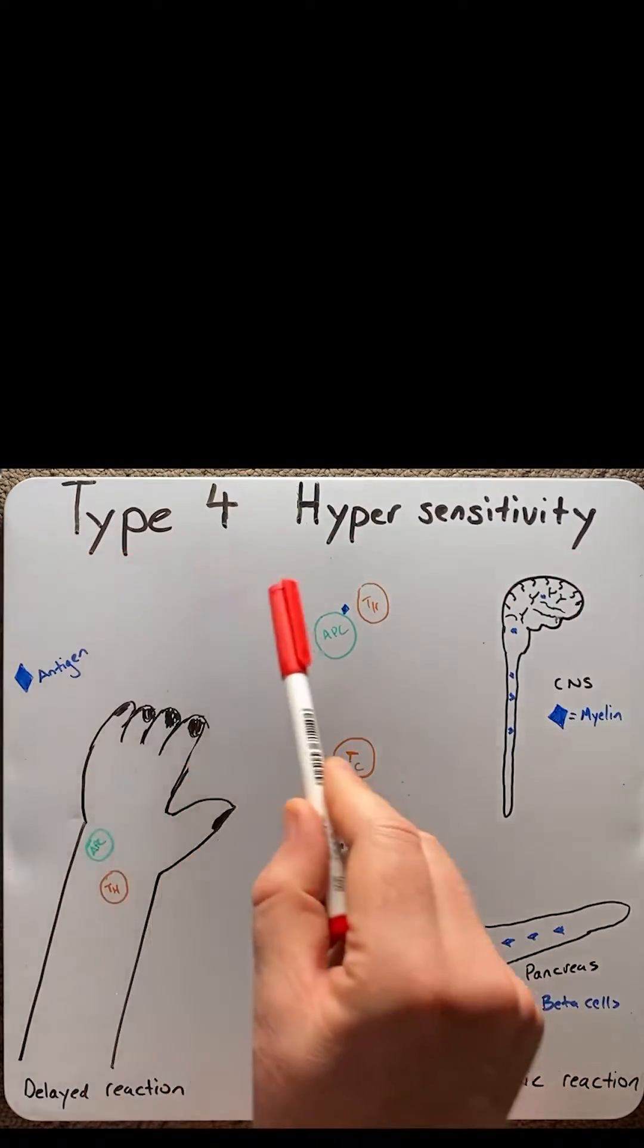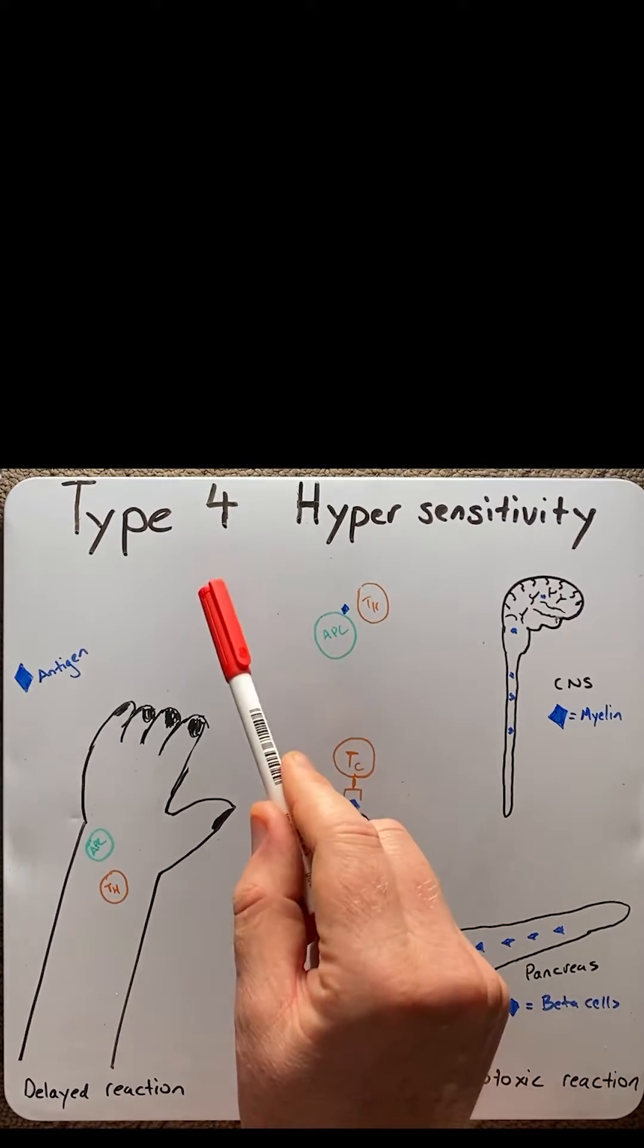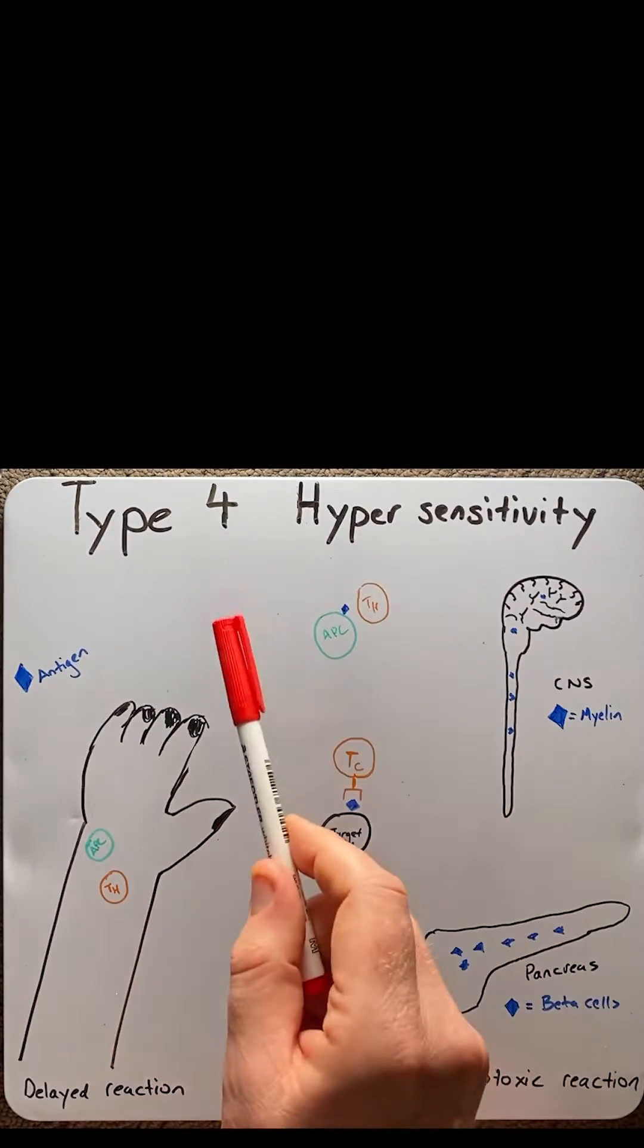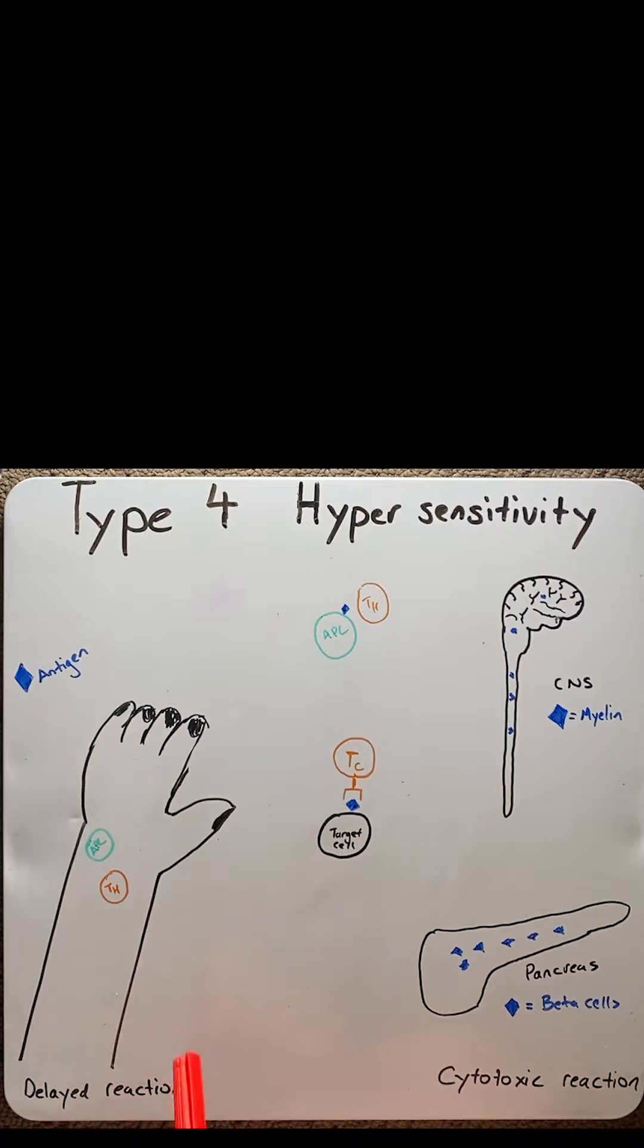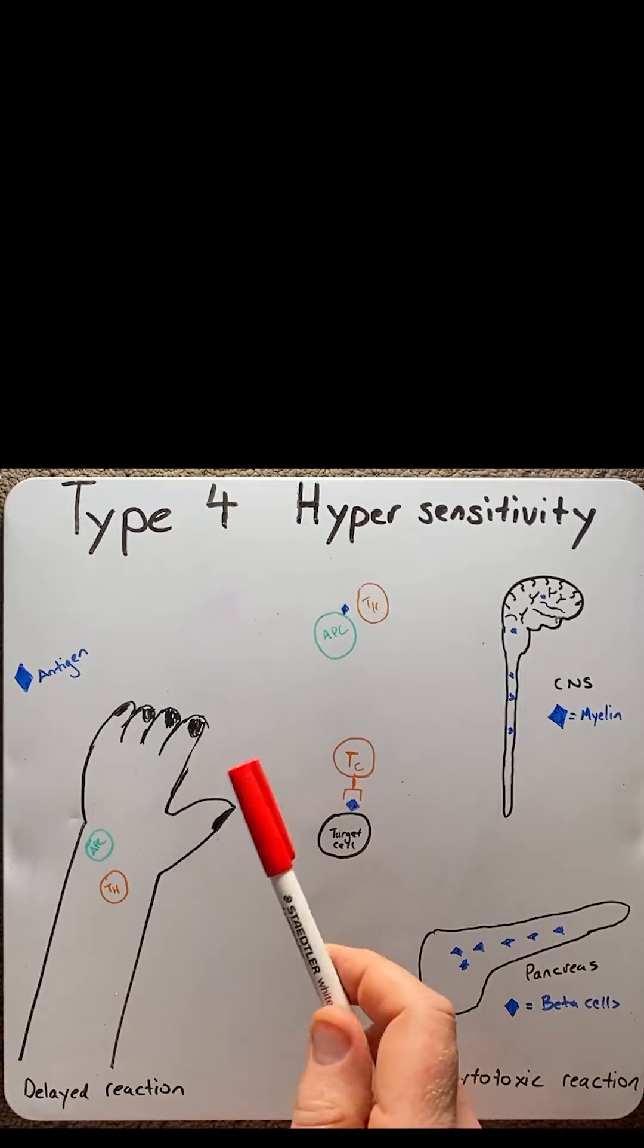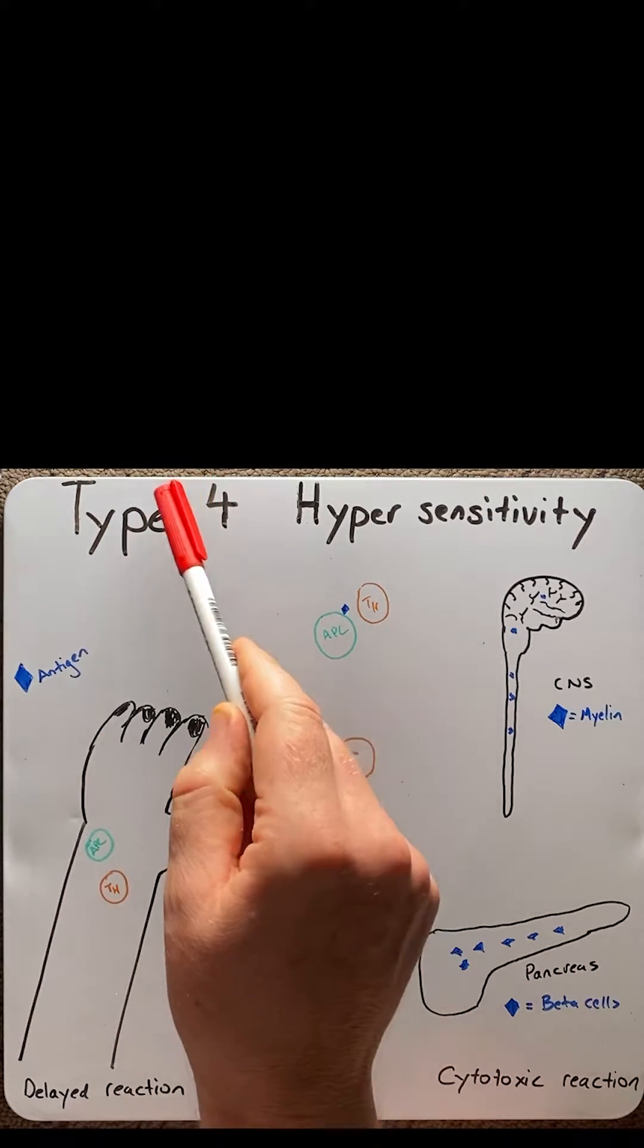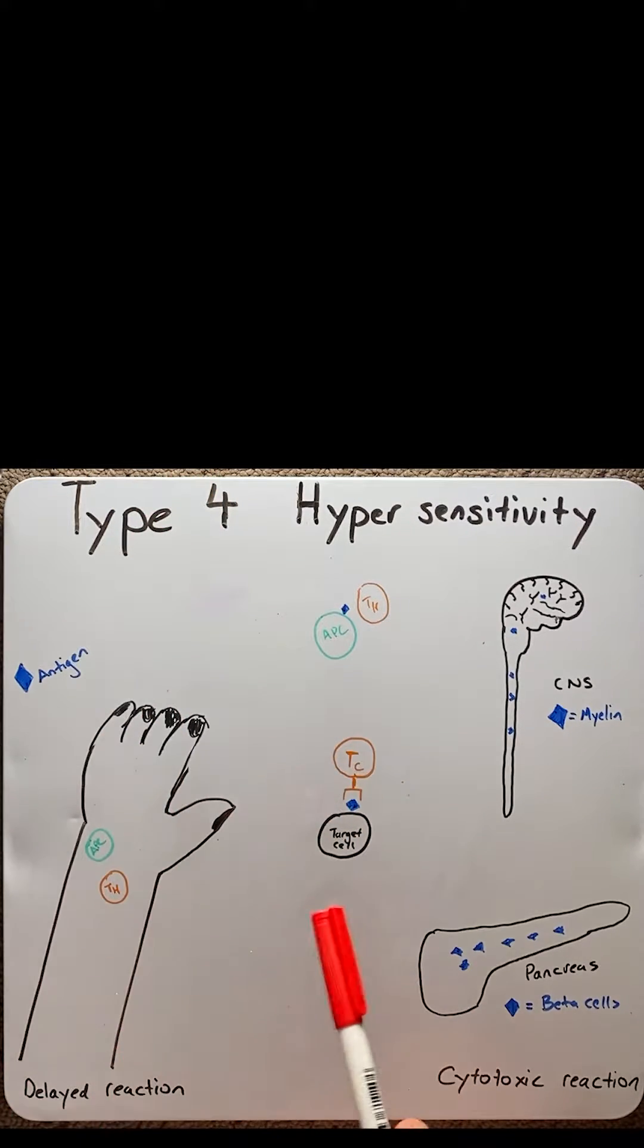In type 4 reactions, these differ from the other three reactions in a couple of ways. Number one, they are delayed reactions, which means they can take days to even years to manifest. Therefore, in some cases, type 4 reactions can be known as delayed hypersensitivity.